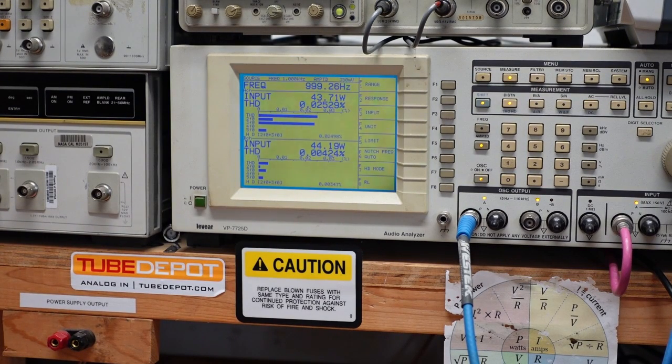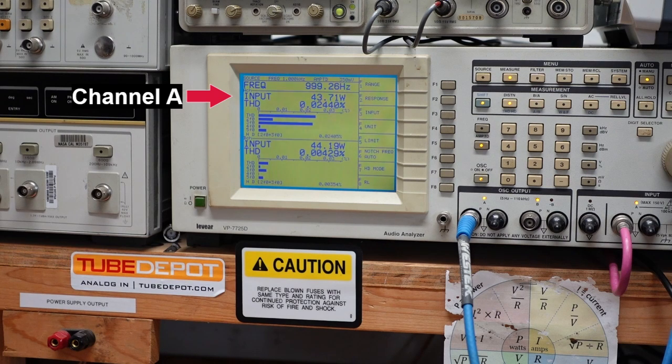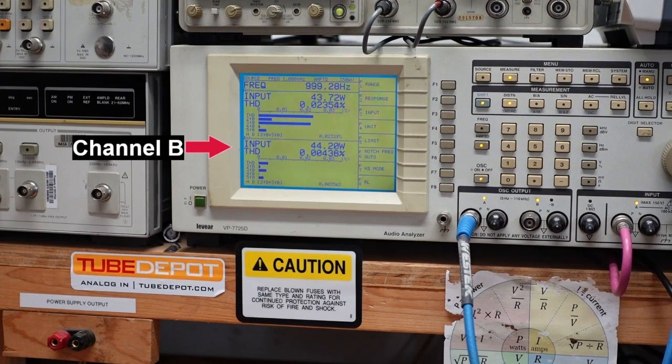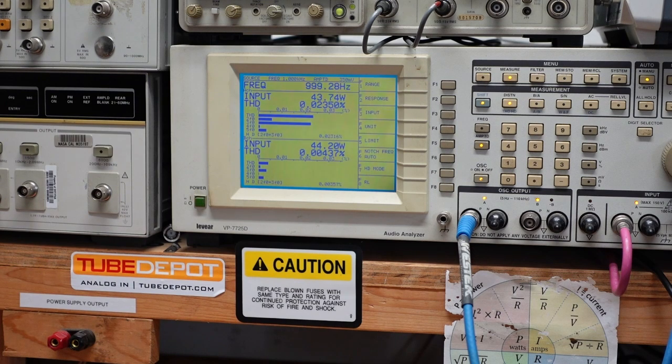So channel A, which is from the dummy load, is giving us 0.024% THD. Yet if you look at channel B, we've got 0.004. Now I've seen it where it's almost a factor of 10, where I got 0.02 and then 0.002. I was frankly kind of shocked.